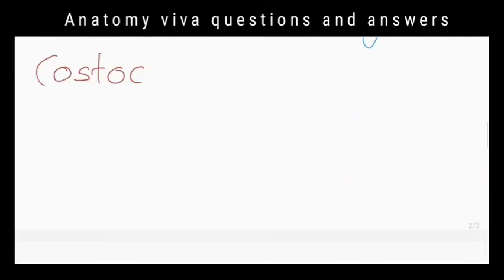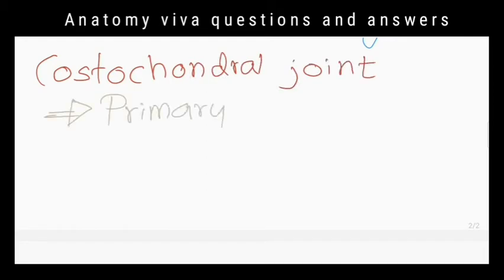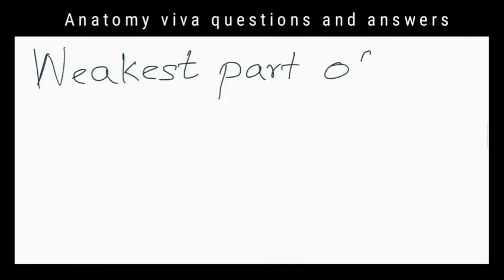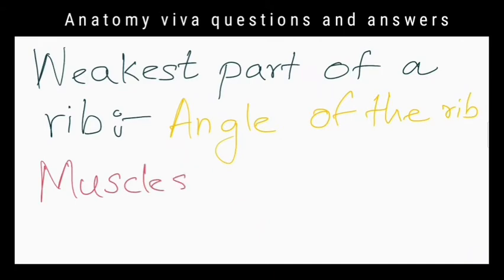What is the type of joint between costal cartilage and rib? Primary cartilaginous joint. What is the weakest part of a typical rib? Angle of the rib.